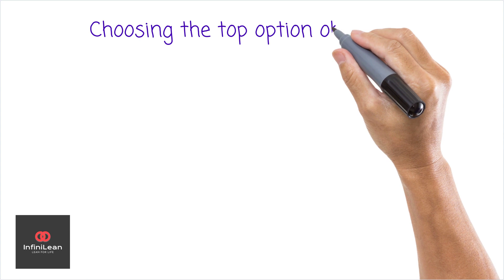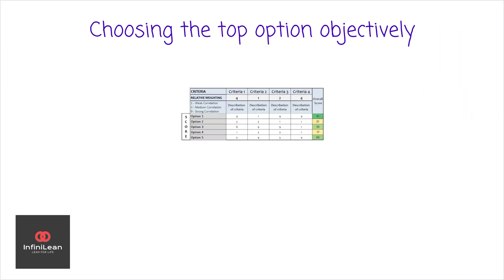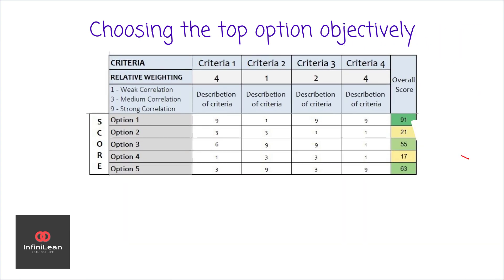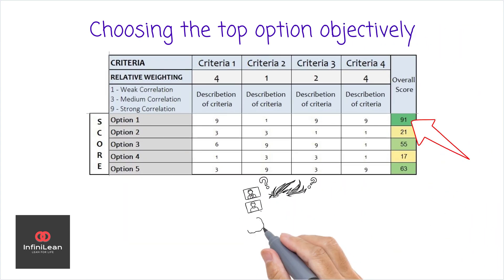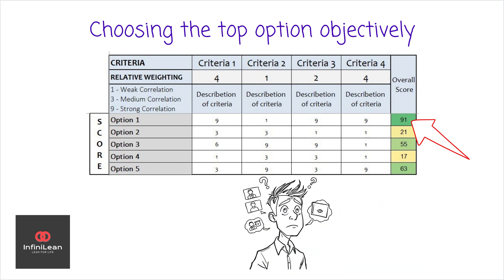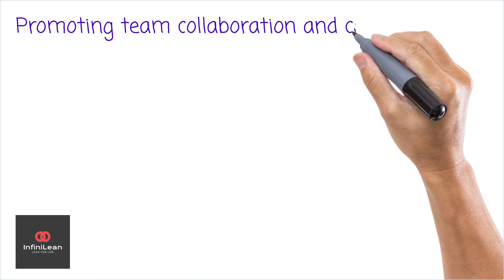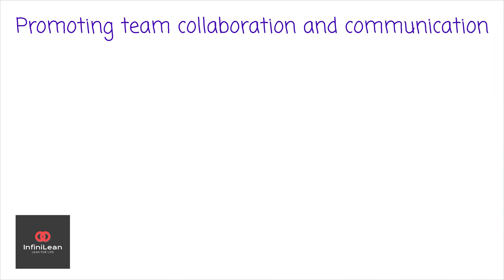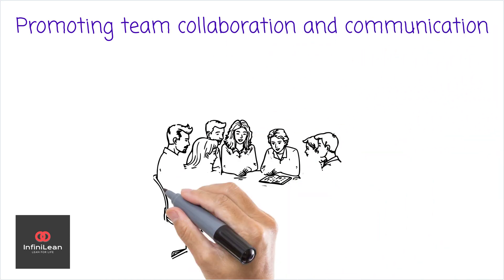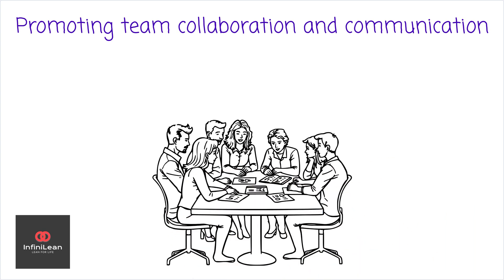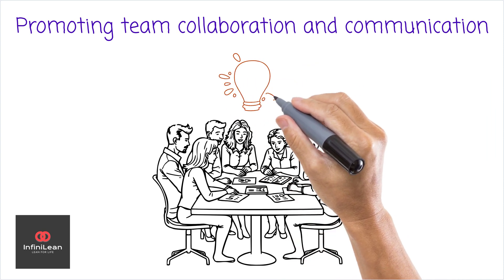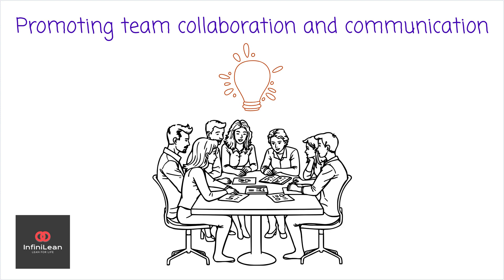The option with the highest total score becomes your top choice, providing a transparent, objective basis for your decision. This method eliminates personal biases and concentrates solely on factual evaluations. Additionally, the Decision-Making Matrix promotes team collaboration — by involving multiple stakeholders in scoring and weighting, team members can contribute diverse perspectives, leading to more balanced and inclusive decisions. It also enhances communication and alignment across departments.